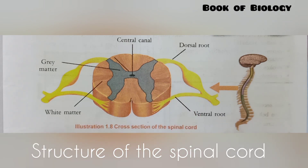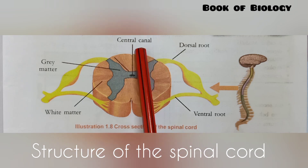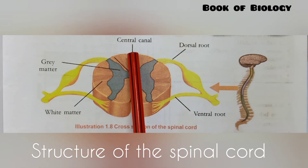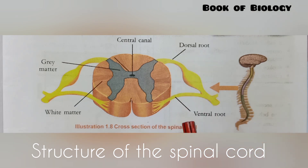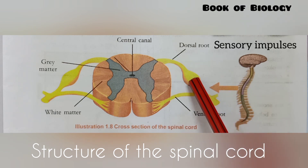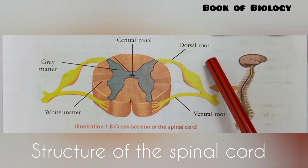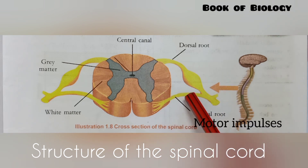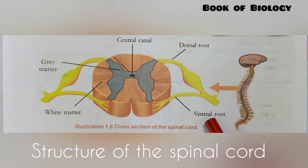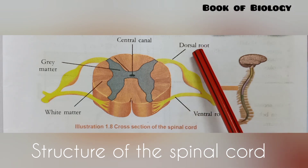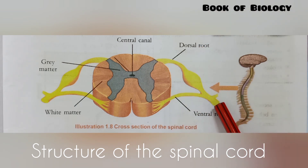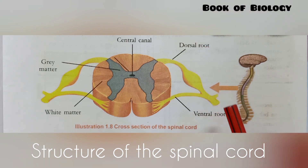In the cross-section of the spinal cord, you can see that outside it has white matter and inside it has grey matter, with a central canal at the center. There is a dorsal root and a ventral root. Sensory impulses reach the spinal cord through the dorsal root, while motor impulses leave through the ventral root. Together, the dorsal and ventral roots form one spinal nerve. There are 31 pairs of spinal nerves.